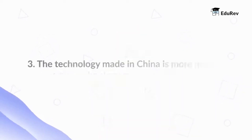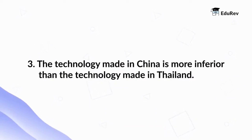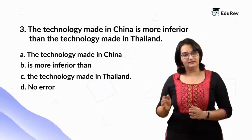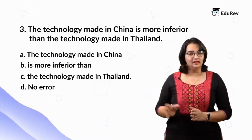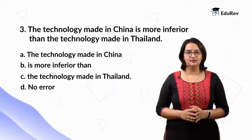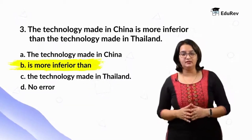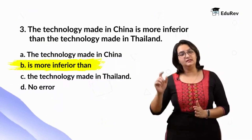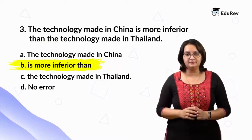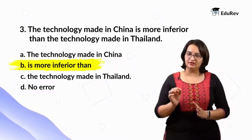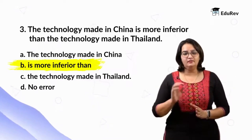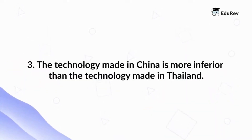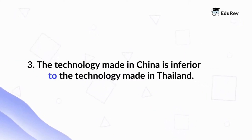Let us take a look at the next example: The technology made in China is more inferior than the technology made in Thailand. Option A: the technology made in China. Option B: is more inferior than. Option C: the technology made in Thailand. Option D: no error. Part B is wrong — there are two errors. Firstly, inferior is itself comparative in nature, so we cannot say more inferior because it becomes a double comparative; we will only use inferior. Second, for some comparatives such as junior, prior, prefer, and so on, we use to instead of than to compare. The corrected statement is: The technology made in China is inferior to the technology made in Thailand.